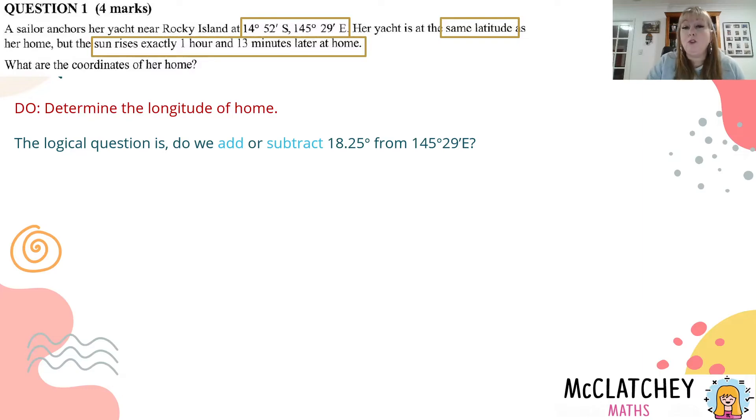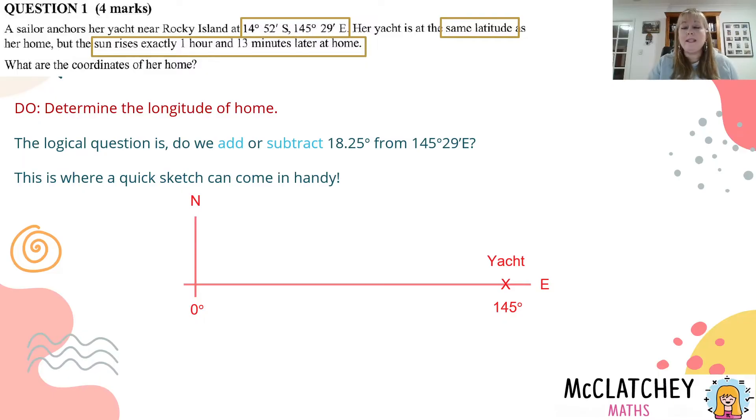Well if you're not sure, a quick way to do it is to come up with a quick sketch. So I've drawn a very quick one here. I always start with the north line, which is my Greenwich meridian - that's zero degrees. Then I'm going to put east on there. I don't need to put west and south, they're not relevant to the particular task. So put a really long line to the east because 145 degrees is a long way across from England, and there's our yacht at 145 degrees.